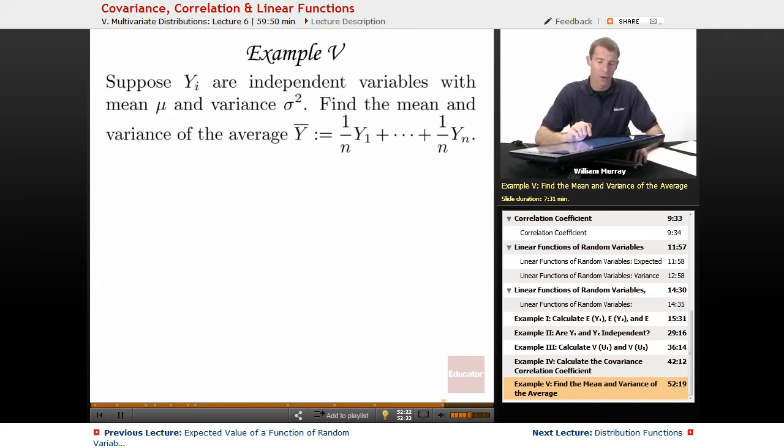In our last example here, we've got independent variables, but they all have the same mean and the same variance. We want to find the mean and the variance of the average of those variables.